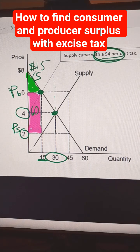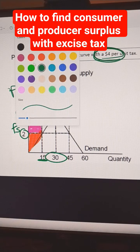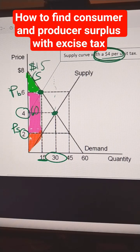The producer surplus is all the way down here. It's going to be this orange triangle here. It's the area above the supply curve but below the price that the sellers get to keep. So that would also be 2 times 15, so the producer surplus would be $15.